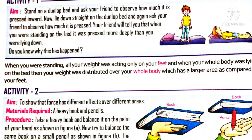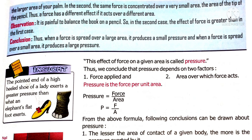Now if we look at Activity 2, you can understand better. The aim is to show that force has different effects over different areas. The materials required are a heavy book and pencils. You are going to keep a heavy book on your palm and balance it. Now balance the same book on a small pencil placed on your palm. In the second case, the book rested on the pencil causes more pain because the force is concentrated over a small area — the tip of the pencil — rather than spread over the large area of the palm.